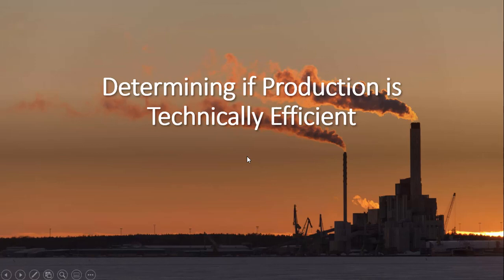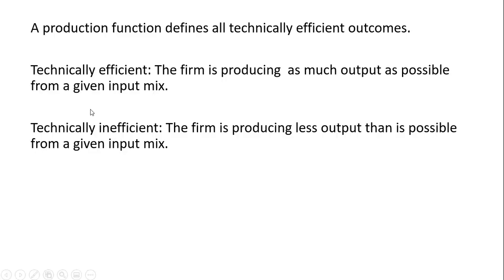In this video, we're going to look at determining if production is technically efficient. A production function defines all technically efficient outcomes. Technically efficient means the firm is producing as much output as possible from a given input mix. Technically inefficient means the firm is producing less output than is possible from a given input mix.